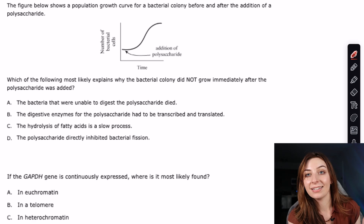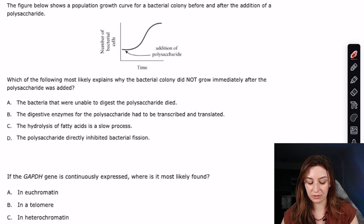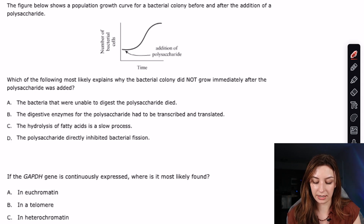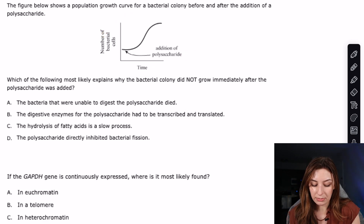Without further ado, this is question 29 of the sample test. It shows a population growth curve for a bacterial colony before and after the addition of a polysaccharide. The question asks: which of the following most likely explains why the bacterial colony did not grow immediately after the polysaccharide was added?